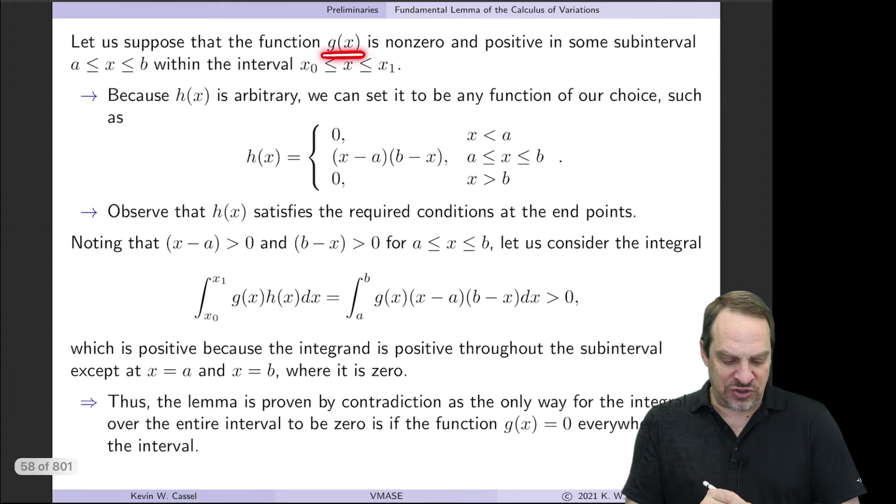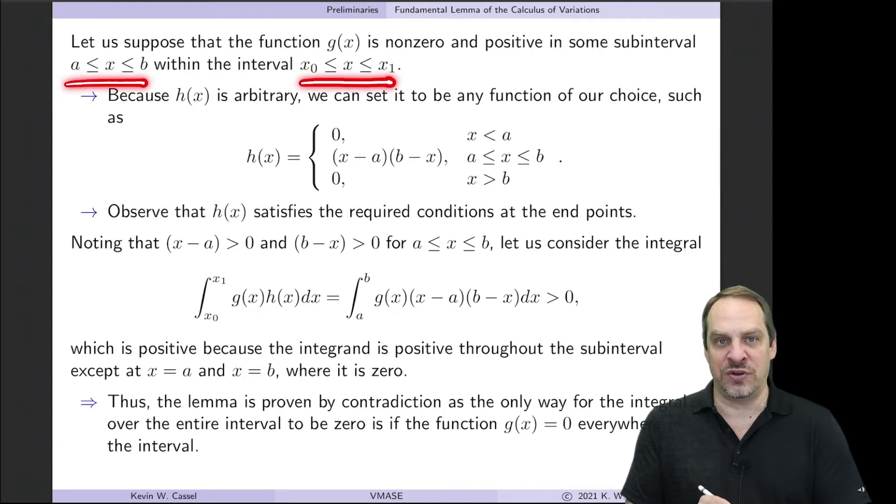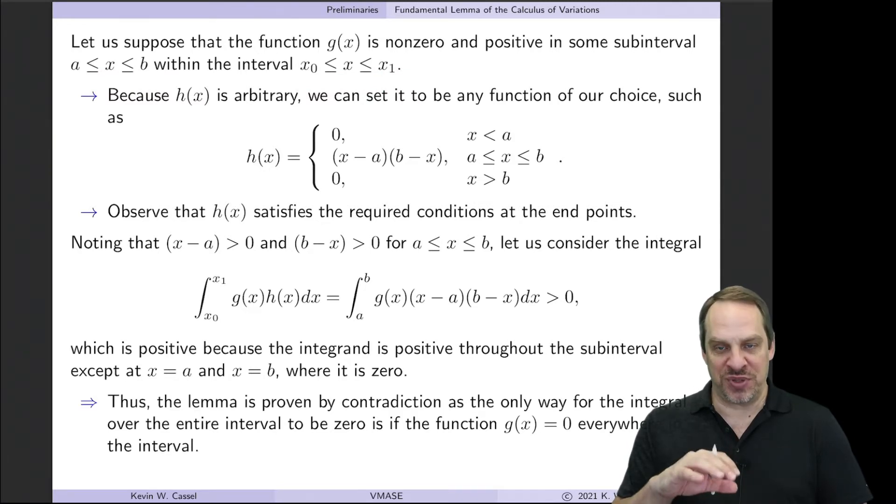So let's suppose that the function g(x) is both non-zero and positive in some sub-interval from a to b within the interval x0 to x1. And what we're going to show is that by making that assumption, this lemma cannot be satisfied, and so therefore the opposite has to be true.